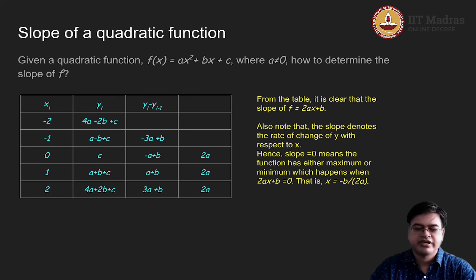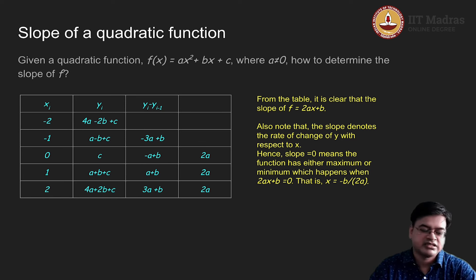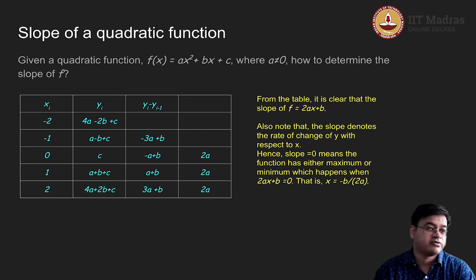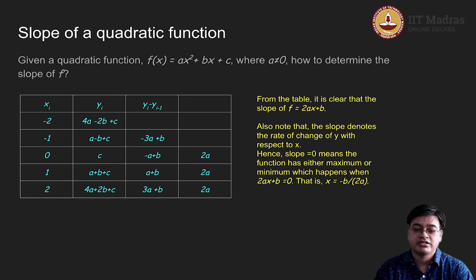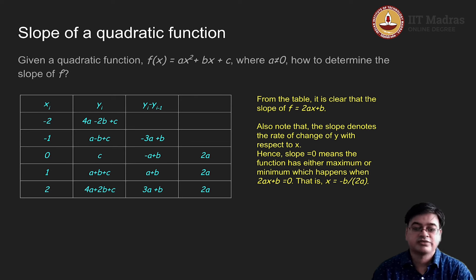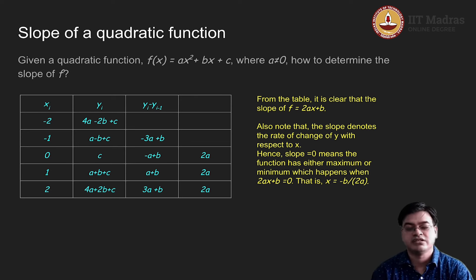The point about the axis of symmetry x = −b/(2a) is still to be addressed, and we will come to it later. But as you can see, the slope of a quadratic function is significantly different from the slope of a line. The slope of a line is constant, whereas the slope of a quadratic function f is no longer constant — it is a variable: 2ax + b, which depends on a and b but not on the constant c, which is expected.